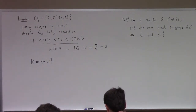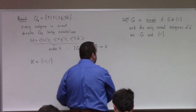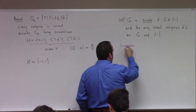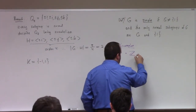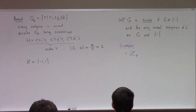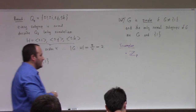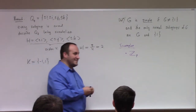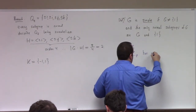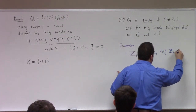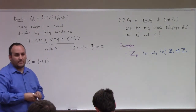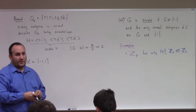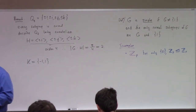The quintessential simple group is ZP, also known as CP. A group of prime order is automatically cyclic, and it has only {0} and ZP as subgroups. Of course every subgroup is normal because ZP is abelian. So groups of prime order are simple because they only have the subgroups of themselves and {1}.